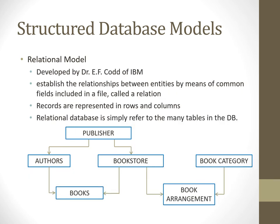The relational model, developed by E.F. Codd of IBM, establishes relationships between entities by means of common fields included in a file called a relation. Records are represented in rows and columns, and the relational database refers to the many tables in a database — for example, publisher, authors, bookstore, books, book category, and book arrangement tables. We'll get a better understanding later on of why it's called relational.